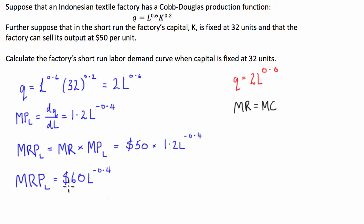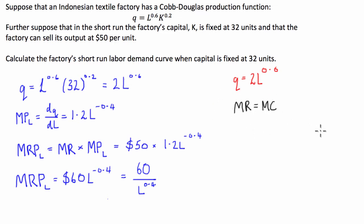So the marginal revenue product of labour equals 60L^(-0.4), or written more neatly, 60 divided by L^0.4. This represents the extra revenue the textile factory can derive from employing the next unit of labour. For a profit-maximising firm satisfying the condition that marginal revenue equals marginal cost, the firm will be willing to pay a wage rate equal to this marginal revenue product. So the marginal revenue product of labour simply equals the wage rate W.